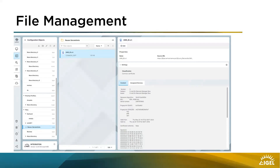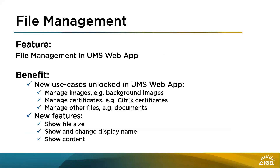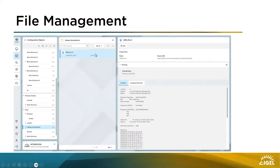The new design gives you more space to show information — great job. Our developers did a great job here. To put it together: we have new use cases unlocked in the UMS web app. You can now manage images like background images, manage certificates, and finalize Citrix profiles in the UMS web app. You can also manage other files like documents. Additionally, you can now see the file size — this wasn't possible in the console — and there's a display name for the file that you can edit in the UMS web app.